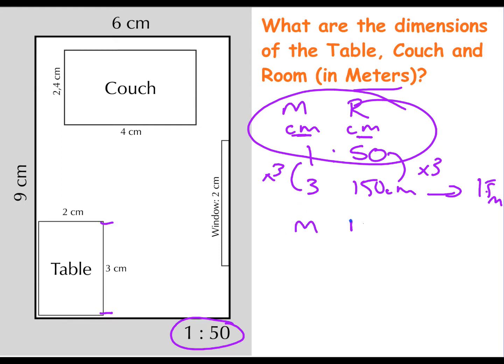So for example, if you wanted to work out the length of the room, our scale is 1 to 50 and the room, let's say, is 9 centimeters long on our drawing. So the 9 goes under here. We multiply by 9, multiply by 9 and we end up with 450 centimeters. To convert it into meters, we have to divide by 100, so you end up with 4.5 meters as the length of the room.